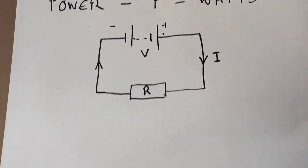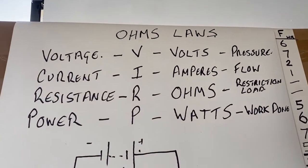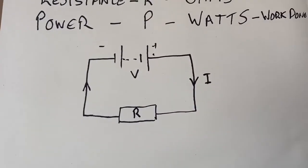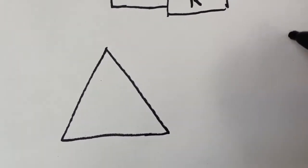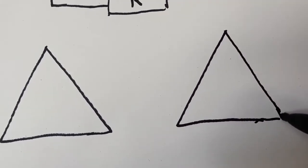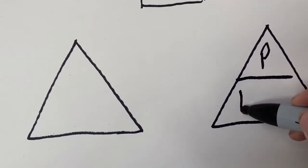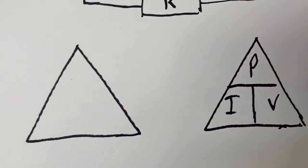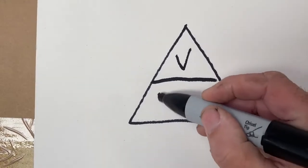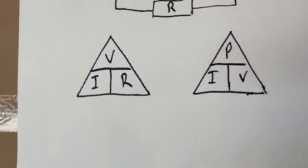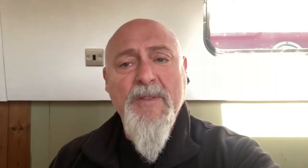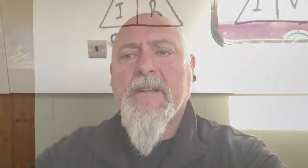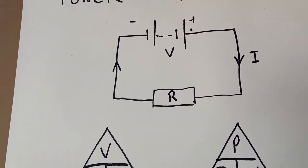Now for the maths. These values can be put into triangles that allow us to solve any circuit like this - and really more complex circuits. There's the power triangle and the voltage triangle, sometimes known as the VIR triangle. Those triangles help us solve any circuit: if we know two things we can calculate the rest. Are you with me so far? Let's see how these work in theory by putting some values into that circuit.